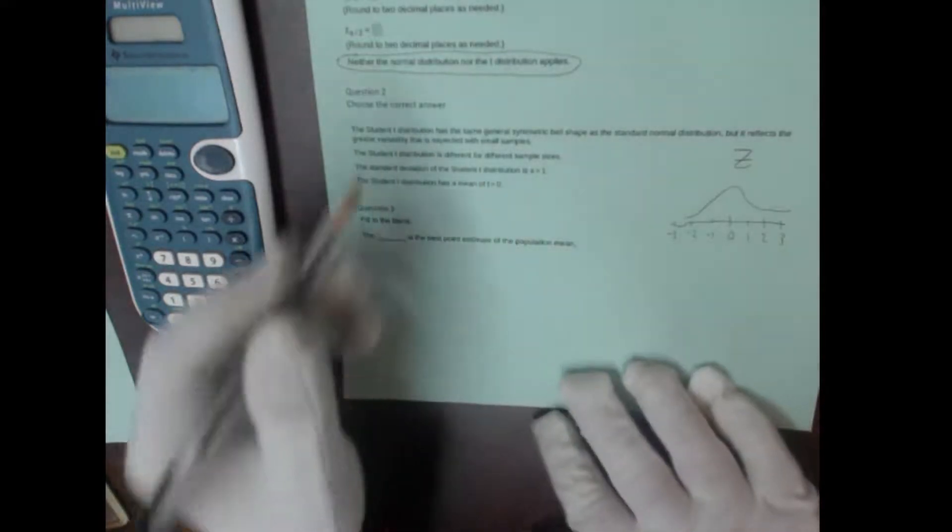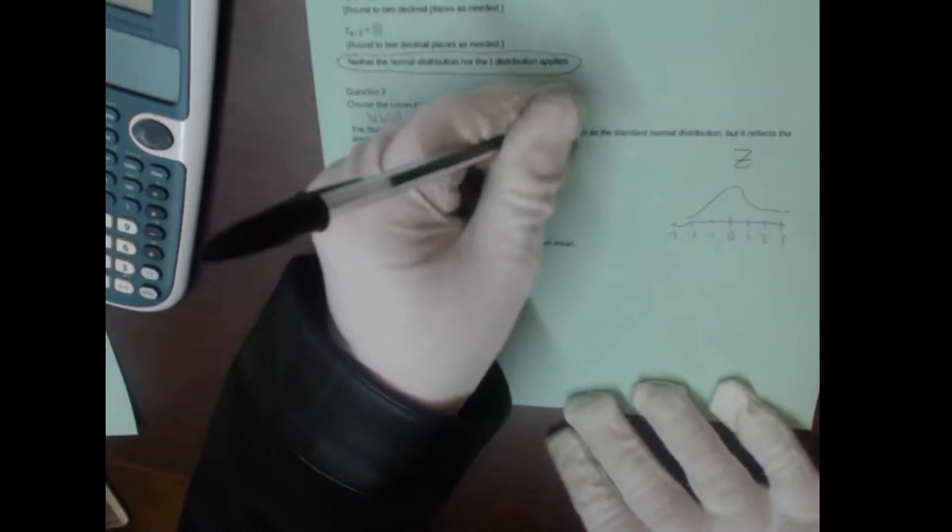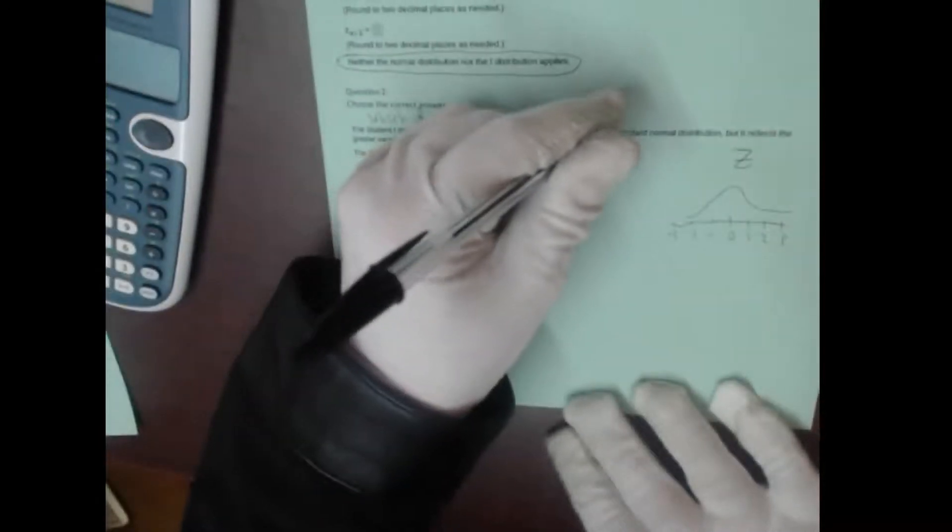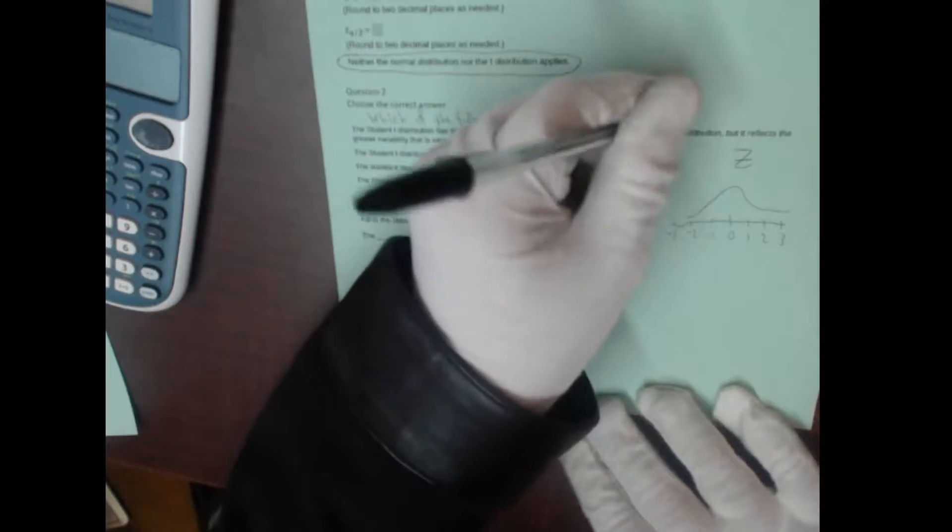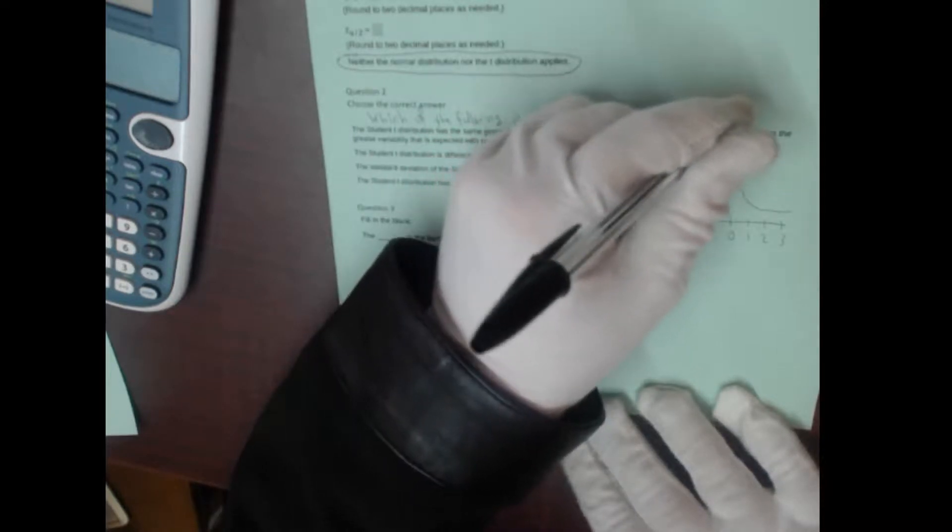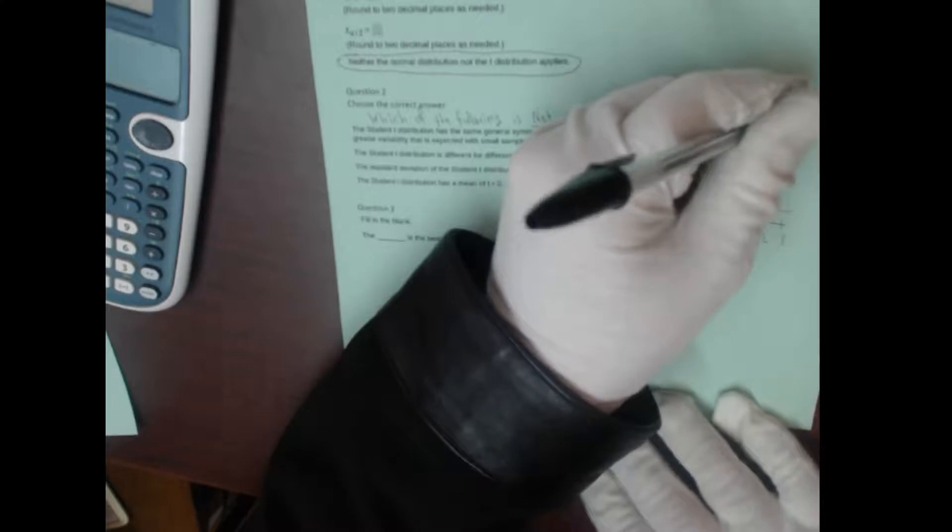So the correct answer here, which of the following... oh, I've left off a sentence. It should say right here, which of the following is not a property of the student t-distribution.